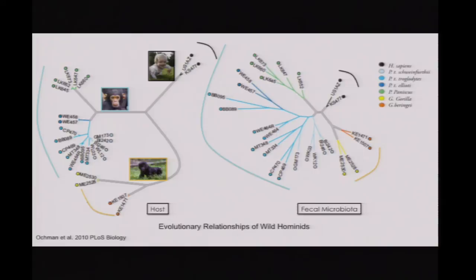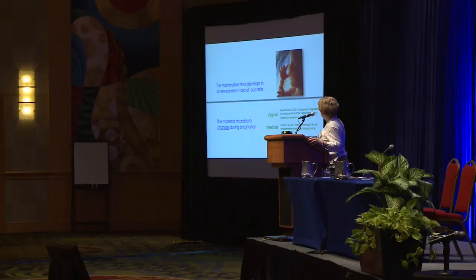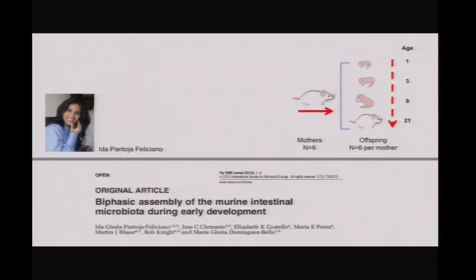What this means is that genes have to be transmitted within species, and from the microbiota point of view, vertical transmission has to be very important. We believe the mammalian fetus develops in a bacteria-free environment, but the mother's microbiota changes in the vagina and in the intestine, as Ruth Ley told us yesterday. So we asked: how does the microbiota assemble early in life?